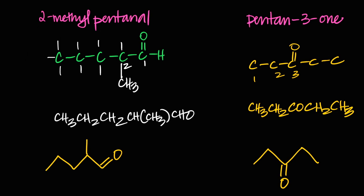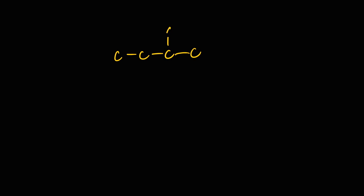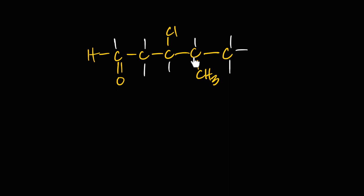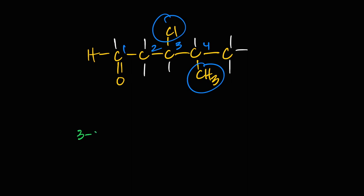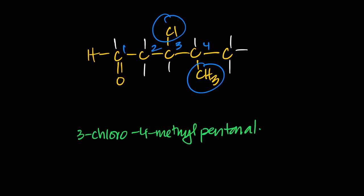Let's try a combined example with Cl and CH₃ substituents plus an aldehyde. The parent chain is five carbons — the aldehyde is carbon one — all single bonds. Chloro is on carbon three; methyl is on carbon four. Alphabetically, 'chloro' comes before 'methyl.' The name is 3-chloro-4-methylpentanal. This is about as complex as naming gets for aldehydes and ketones in the exam.